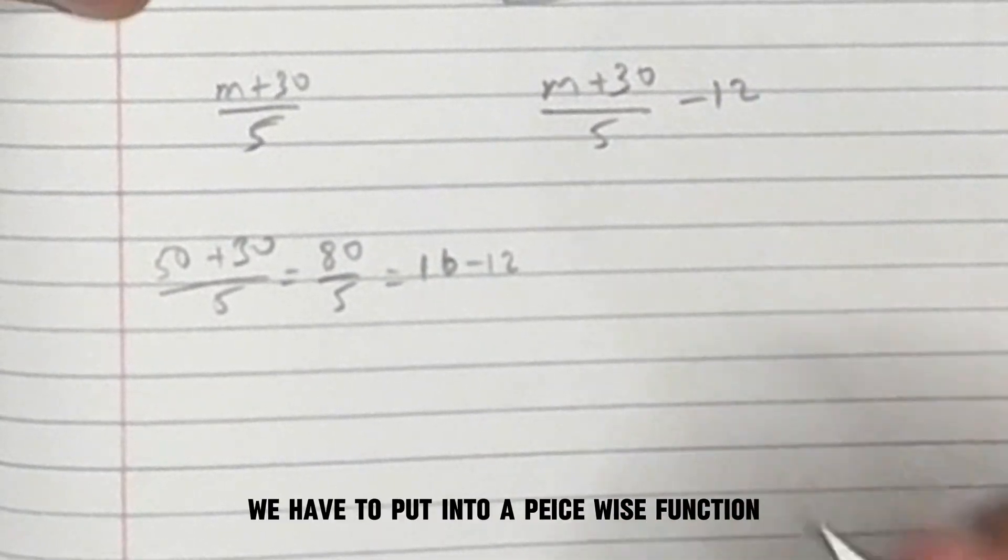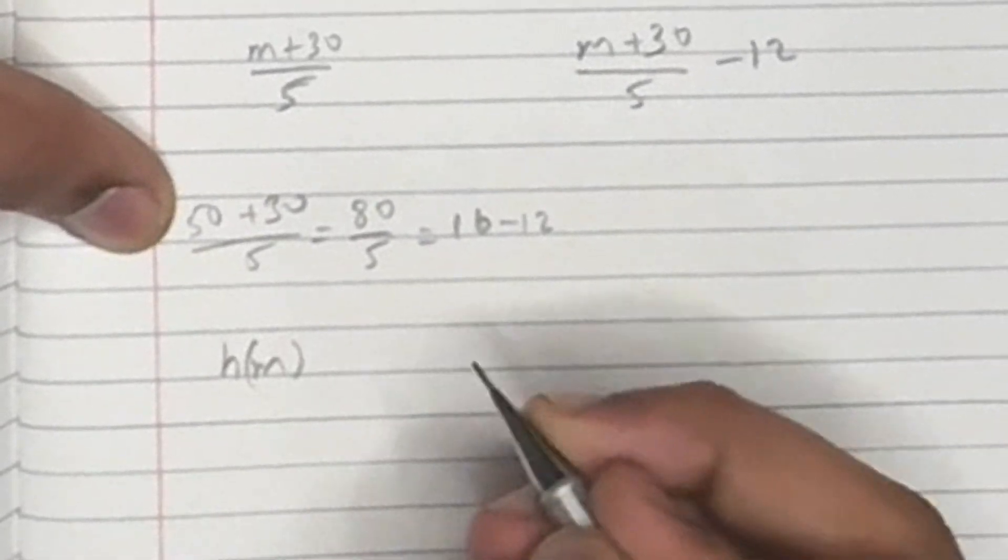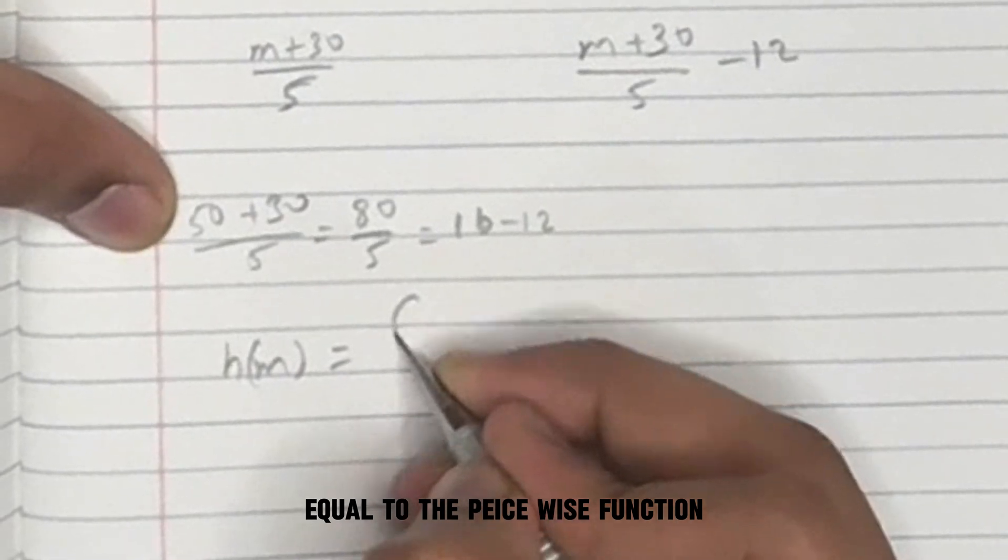Since we have two equations, we have to put them into a piecewise function. So we have h of m equal to the piecewise function.